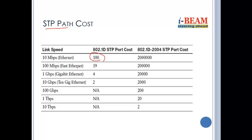The STP cost values are: 10 Mbps = 100, 100 Mbps = 19, 1 Gbps = 4, 10 Gbps = 2. You can see these in the traditional spanning tree cost table.